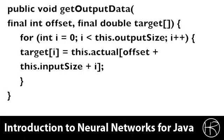There is also a corresponding get output data. It works very similar to the get input data. It retrieves output values from each of the output neurons from the actual data. These are the ideal outputs that we are expecting.